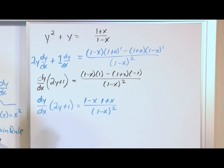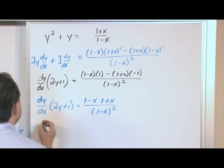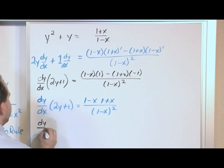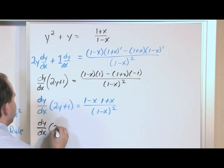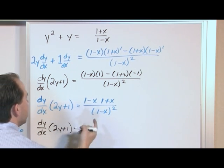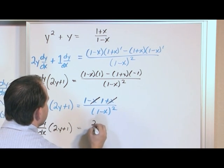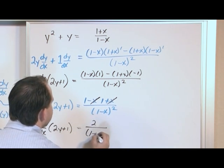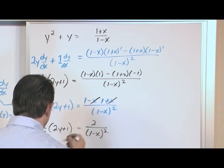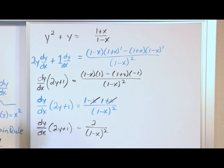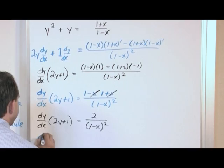So we just simply have some algebra. So just to continue simplifying, what we'll have is dy dx 2y plus 1. On the top, negative x goes out with x. So what we'll have is 2 over 1 minus x squared. So to finish this guy up, we'll just solve for dy dx.